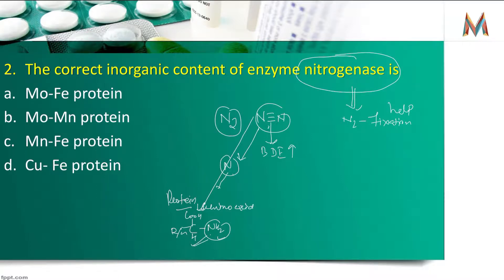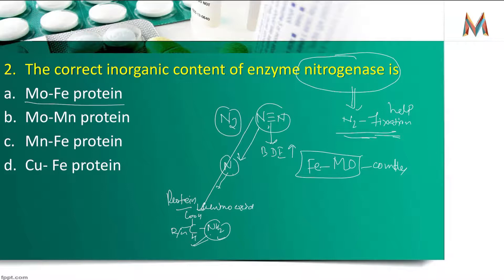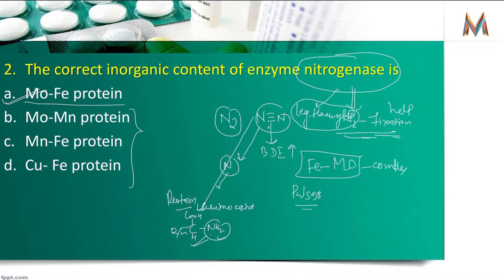Nitrogen की energy इतनी ज़्यादा होती है कि break नहीं हो पाती, इसलिए इसे break करने की जिम्मेदारी other species लेते हैं। Nitrogen fixation में जो metal complex है — iron-molybdenum complex होता है। यह nitrogen fixation activity pulses में होगी। इसमें leghemoglobin होता है, जो bacterial chlorophyll है। यह oxygen scavenger का रोल करता है — क्योंकि nitrogenase की activity anaerobic होनी चाहिए।